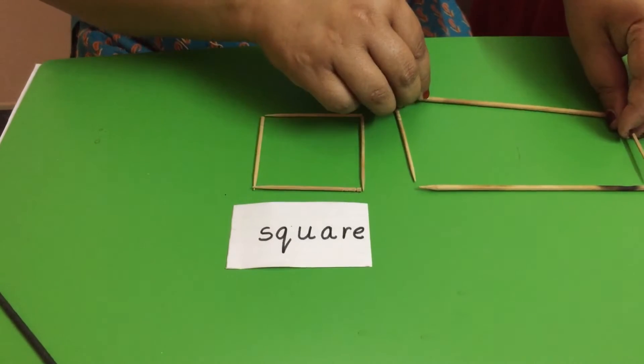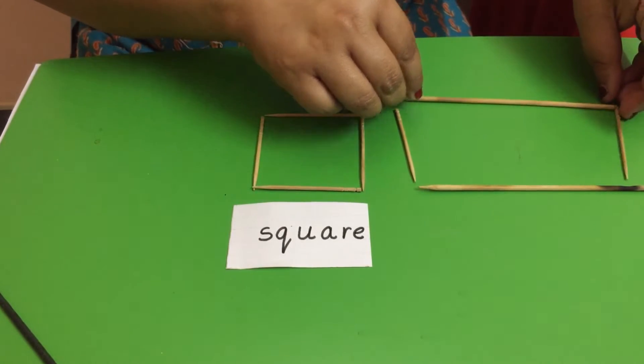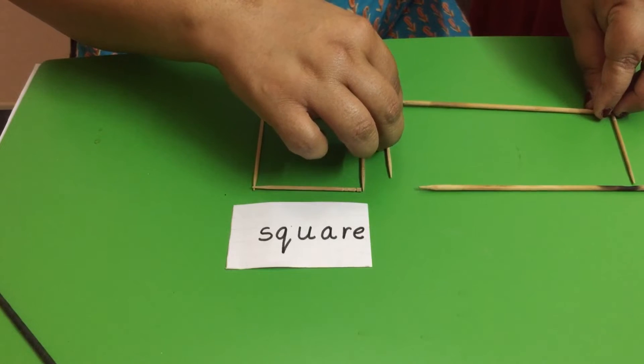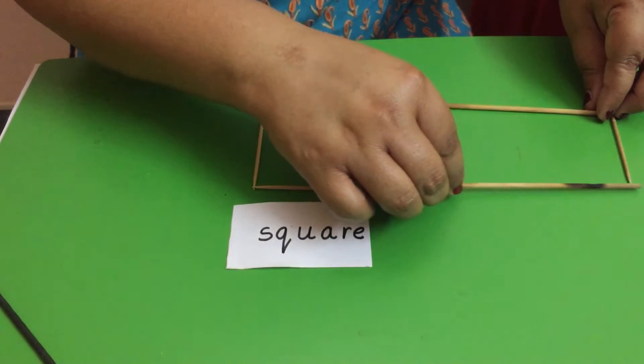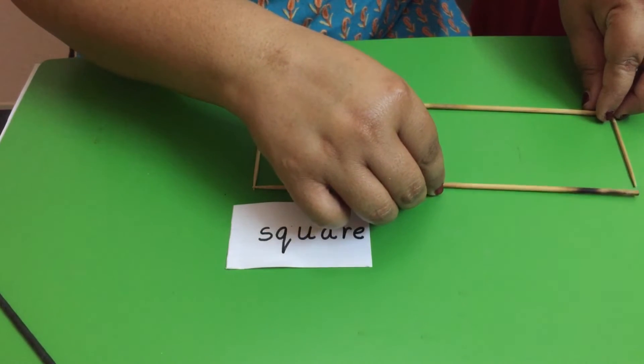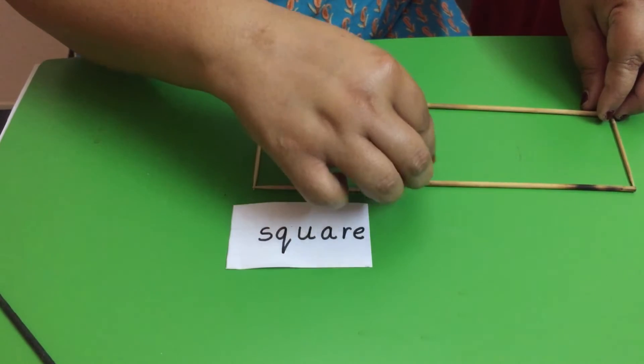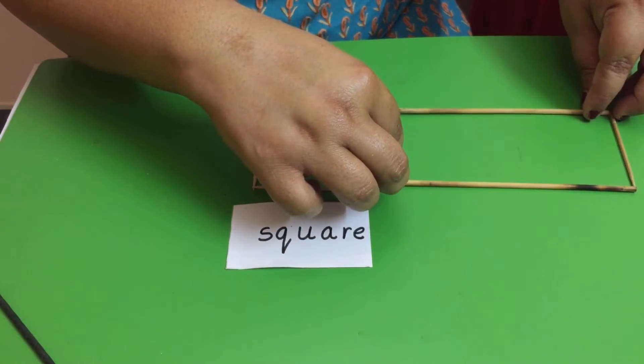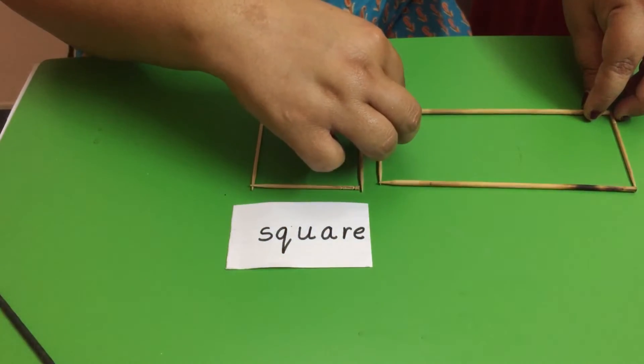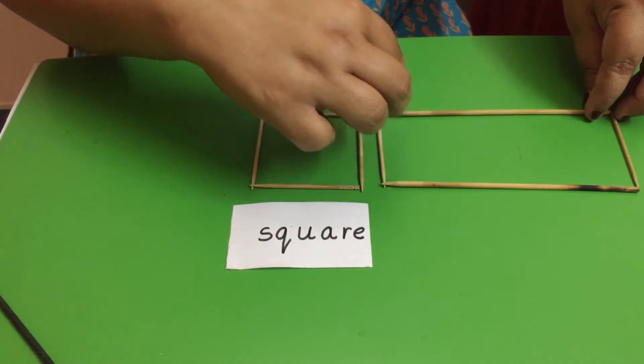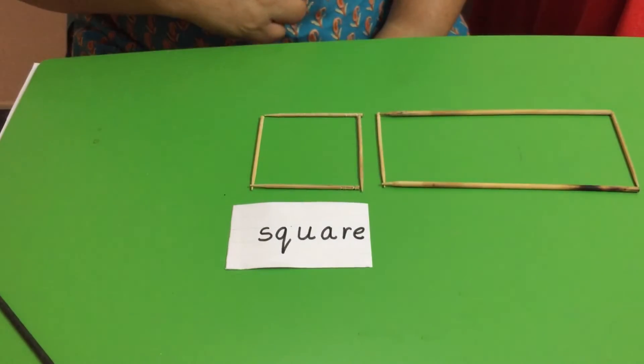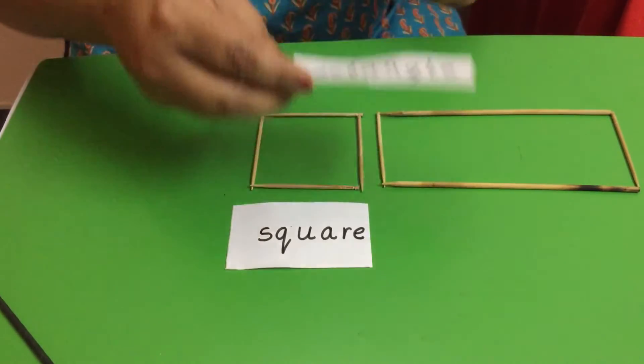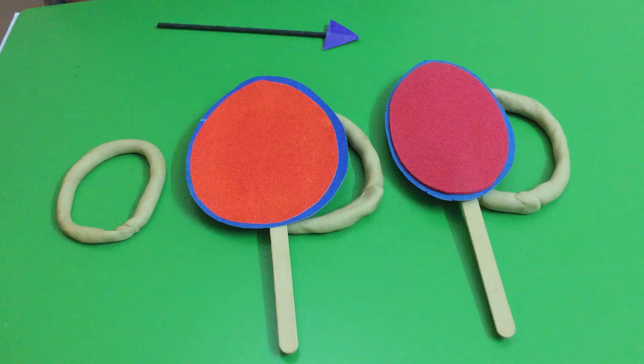Now I am going to put the small sticks like this which are equal and same and they are opposite to each other. So this is rectangle and the word rectangle looks like this.